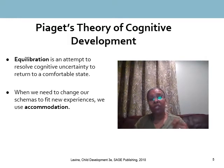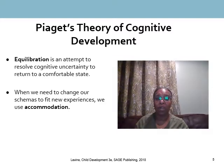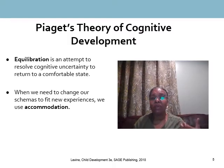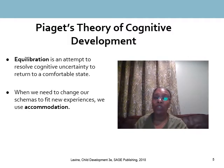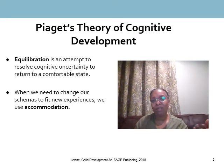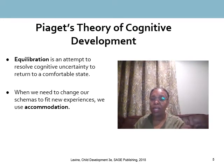Accommodation is when we restructure or modify something we already know so that new information fits even better. It results from problems posed in the environment when our perceptions didn't fit correctly — now we know what we think, and we reshape and fix it so we understand it better.